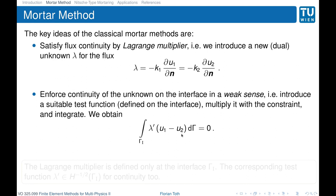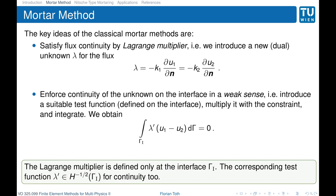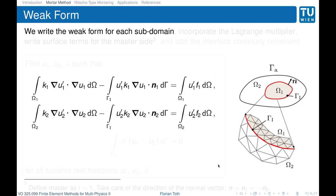This continuity-of-the-unknown equation is of course zero. Note that the Lagrange multiplier is defined only at the interface, and so is the corresponding test function — lambda-prime is only defined on the interface. When we introduce this into our weak form, we write the weak form for each subdomain separately, which is a repetition from before.